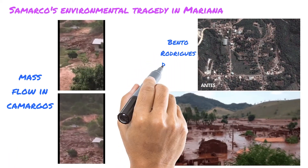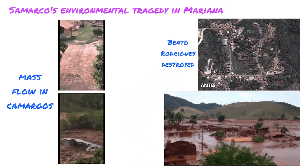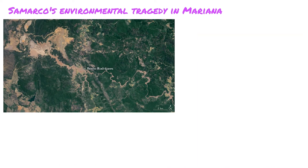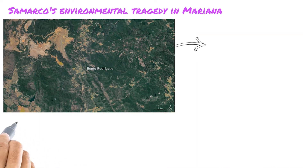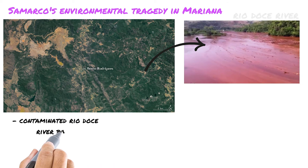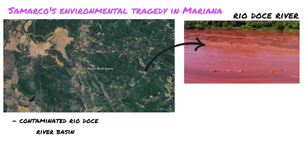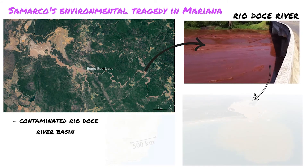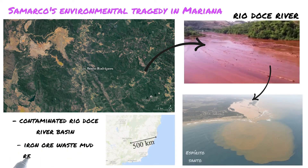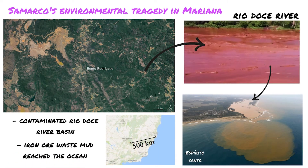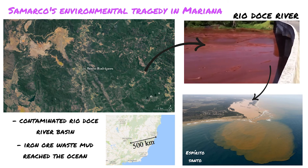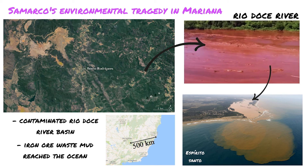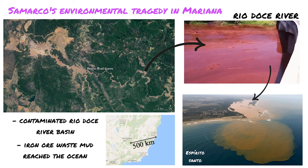Bento Rodrigues was the most affected place, but the destruction went far beyond that area. The mass flow volume was so large that it reached and contaminated the Rio Doce River Basin 100 km away within a couple of days, and after flowing 500 km, it reached the ocean in the state of Espírito Santo on November 22, 2015. It is estimated that mud from the dam collapse will continue to be discharged into the ocean over the next decades.